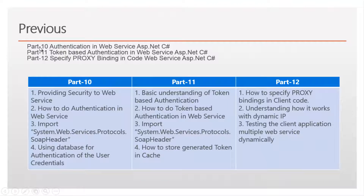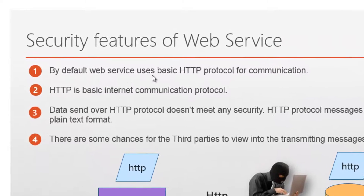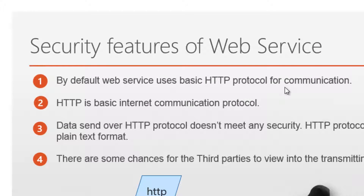If you haven't watched part 10, part 11, and part 12 of this video series, I strongly recommend watching before proceeding. Security features of web service: by default, web services use the basic HTTP protocol for communication. HTTP is a basic internet communication protocol. By default, HTTP does not meet any security features, and HTTP protocol messages are sent and received in plain text format, so the data can be easily understood.